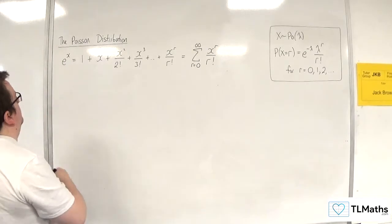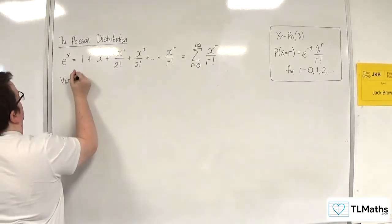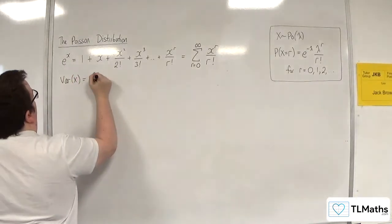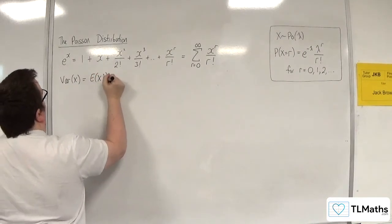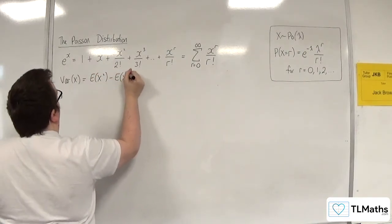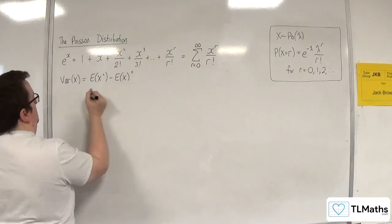In order to get Var of X, we know that that is E of X squared, take away E of X, all squared.